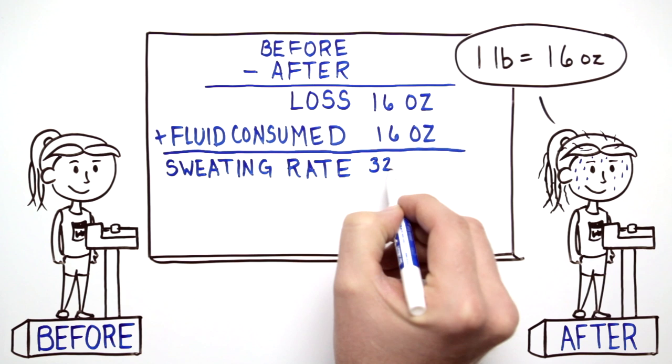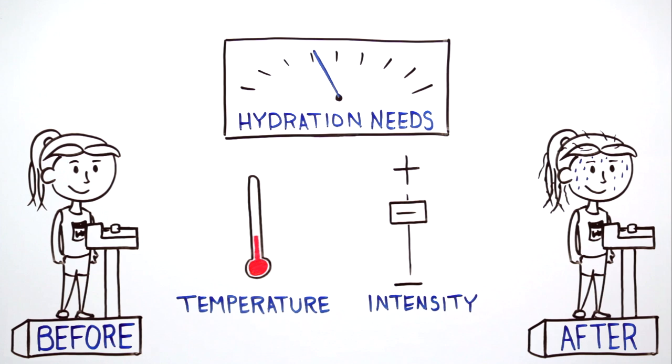If an athlete loses a pound during one hour of training, or the equivalent of 16 ounces of fluid, but also drinks 16 ounces of water during the same time, the athlete's sweating rate is 32 ounces an hour.